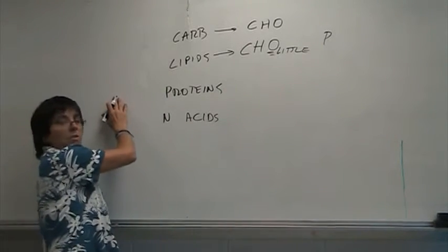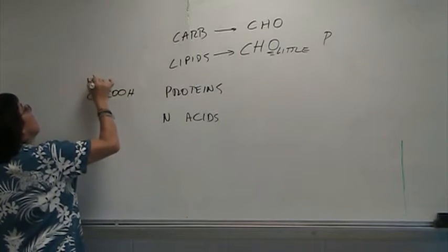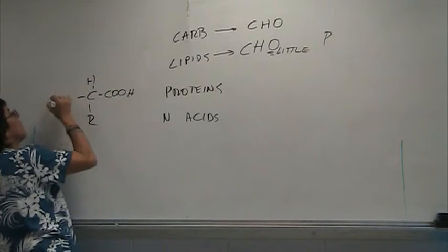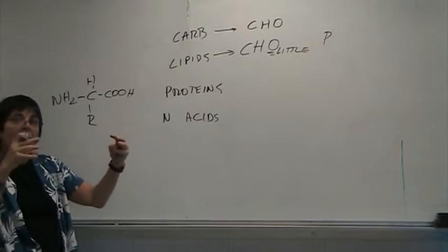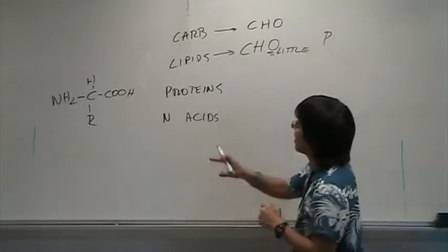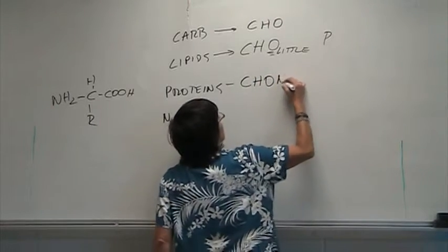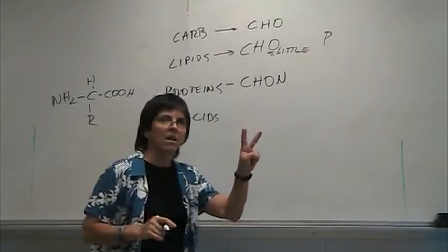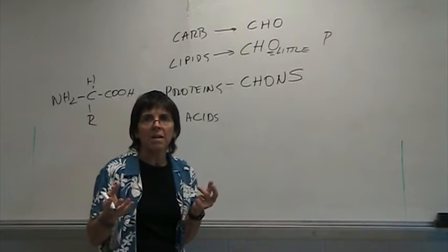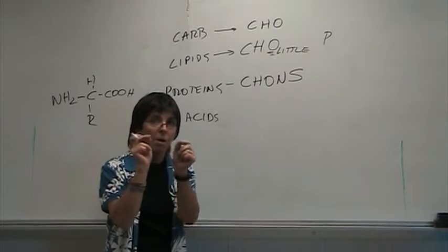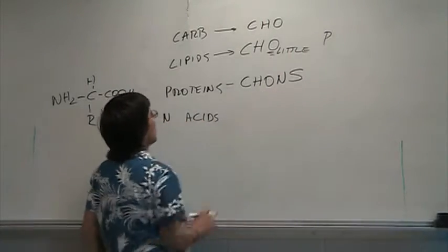If you look at proteins, you know all proteins are made of amino acids. An amino acid is a carbon with a carboxyl group, hydrogen, an R group, and an amino group. If you look at the structure and you have hundreds of amino acids together making a protein, proteins are going to be made basically of carbon, hydrogen, oxygen, and nitrogen. Don't forget that there are two amino acids that have sulfur, and one of those is extremely important in the formation of disulfide bonds when looking at the tertiary structure of proteins.